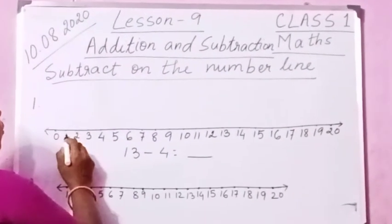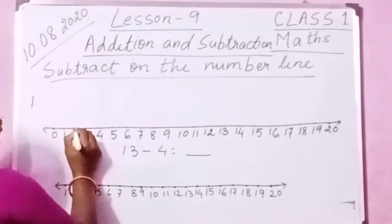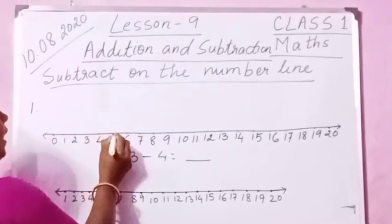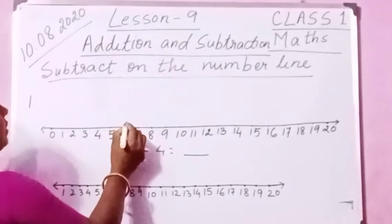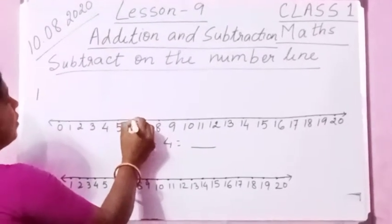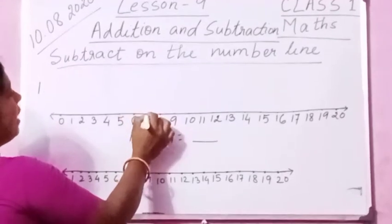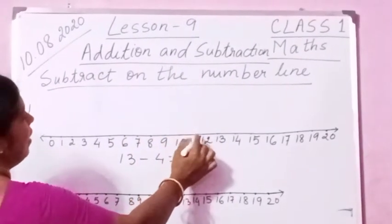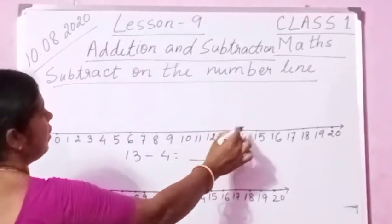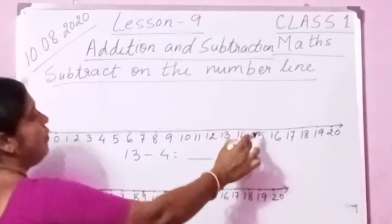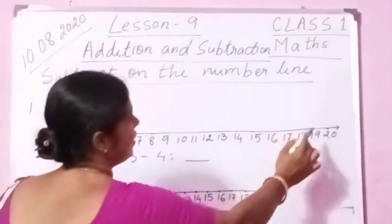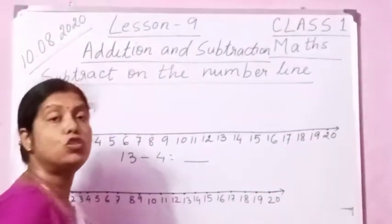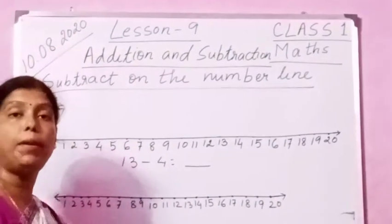Please see: 0, 1, 2, 3, 4, 5, 6, 7, 8, 9, 10, 11, 12, 13, 14, 15, 16, 17, 18, 19, 20. So this is our number line.